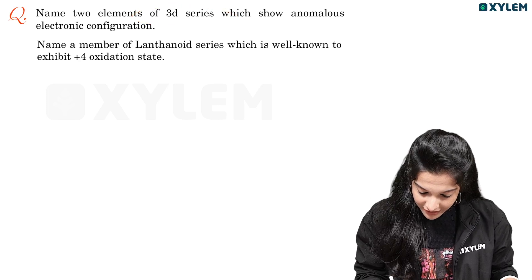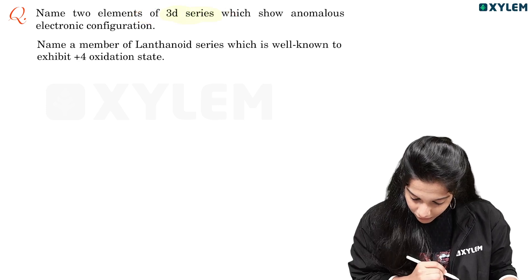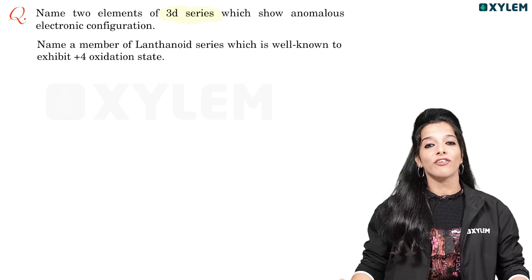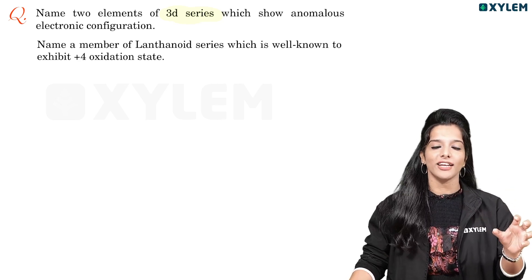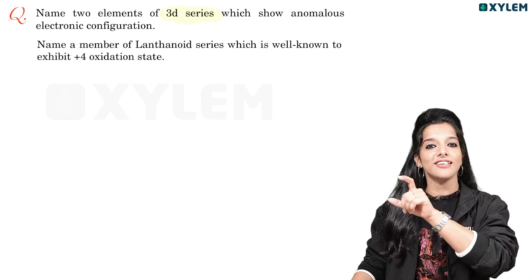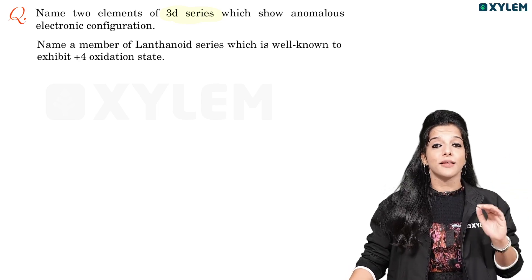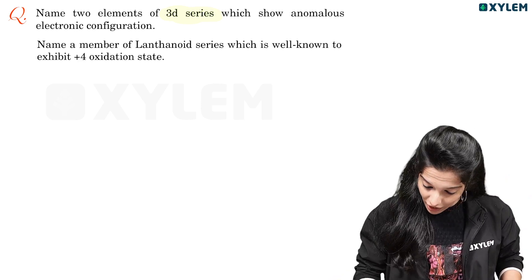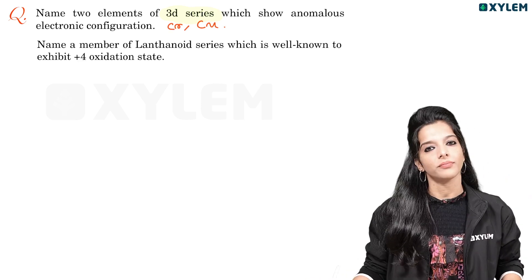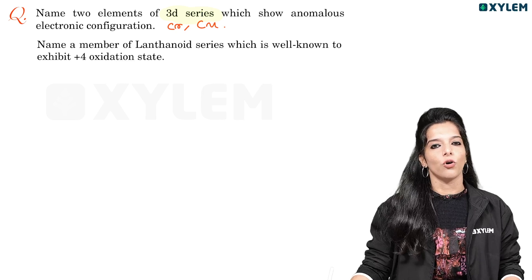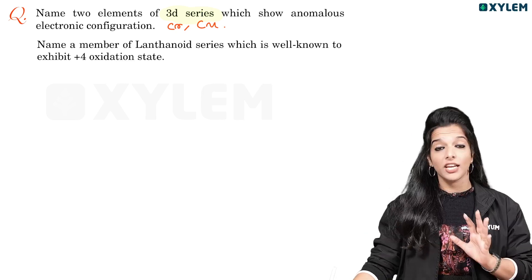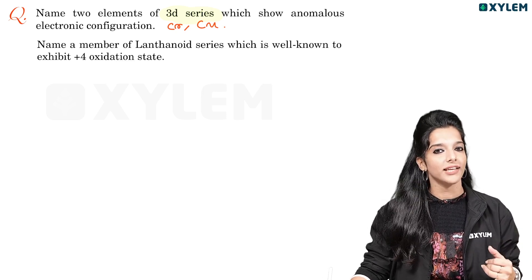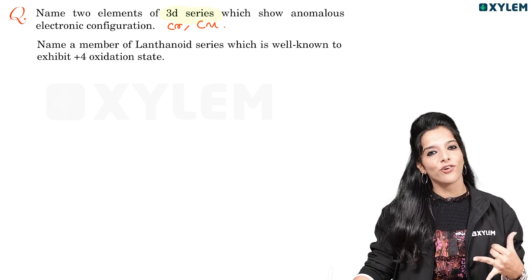In the 3D series, anomalous configuration is seen in 2 elements. We have learned that D and F block elements' electronic configurations include exceptional cases. In the 3D series, there are two elements with exceptional electronic configuration — chromium and copper.